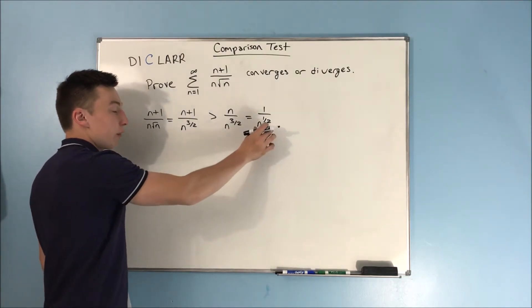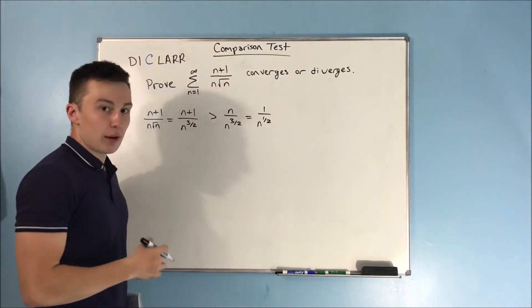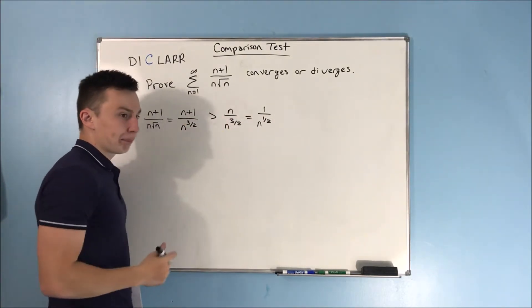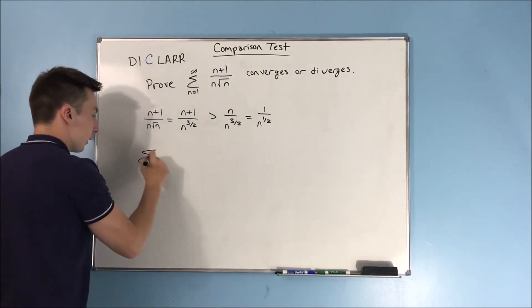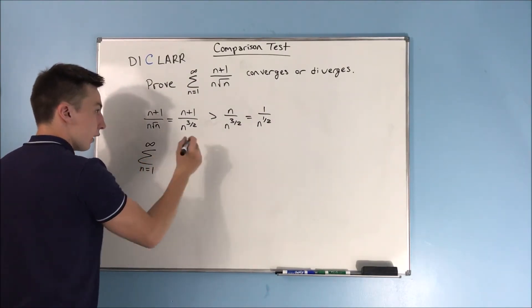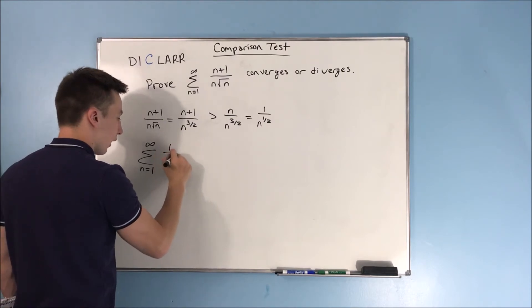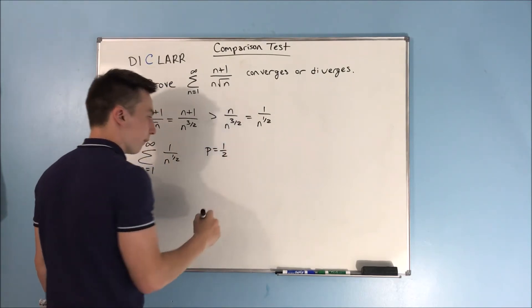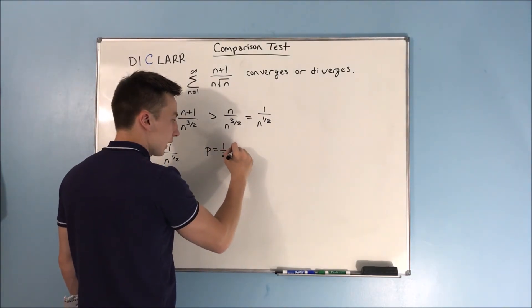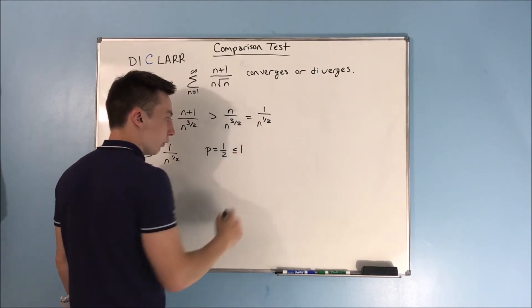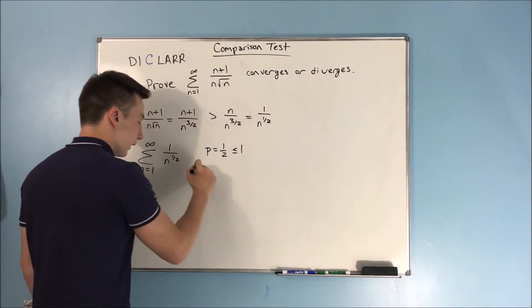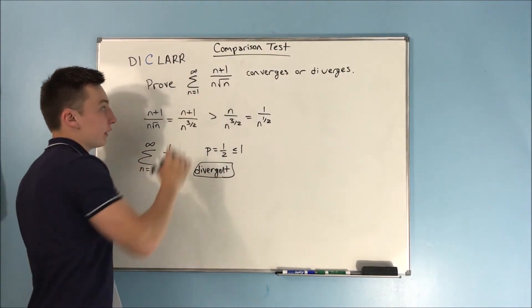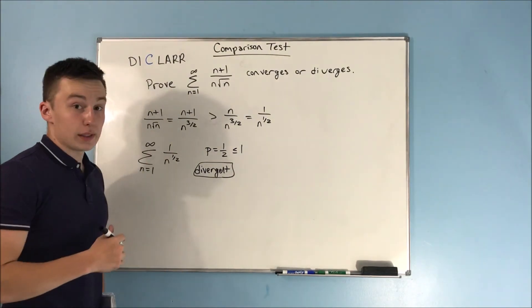So now we need to see if this diverges right here, if this p series diverges, then we know that this diverges as well. So let's see here. We have the sum from n equals 1 to infinity of 1 over n to the 1 half. Well, p equals 1 half here, and that is less than or equal to 1, which means that this is divergent. And that means that this series is going to be divergent by the comparison test.